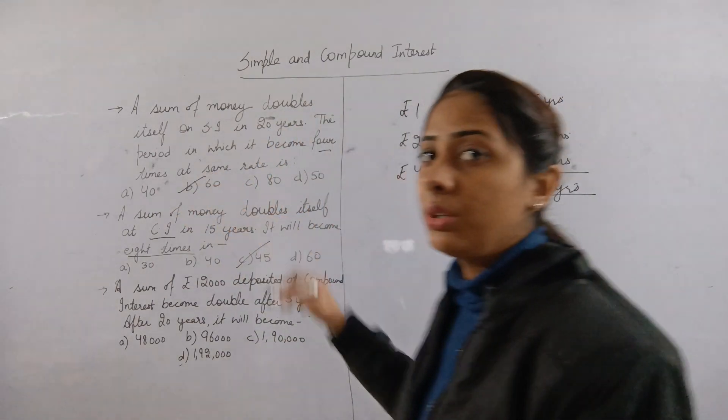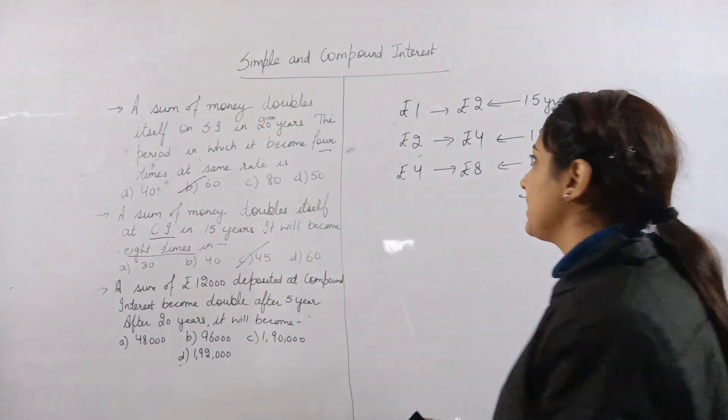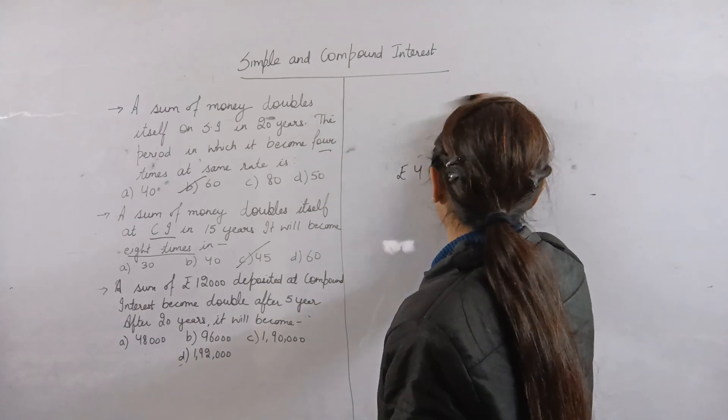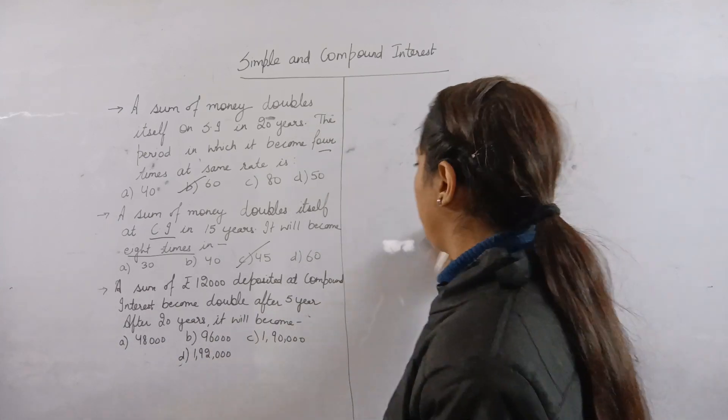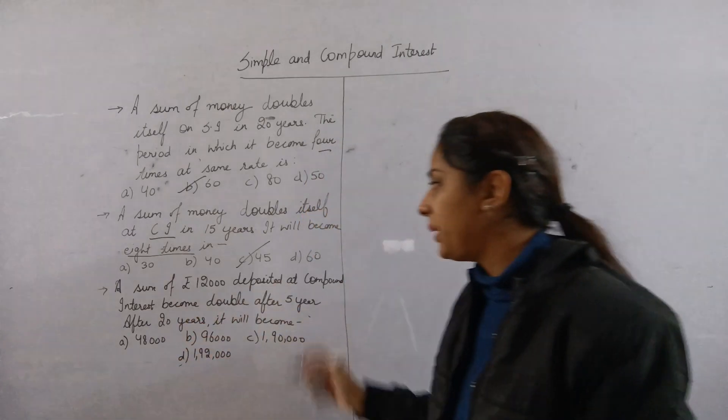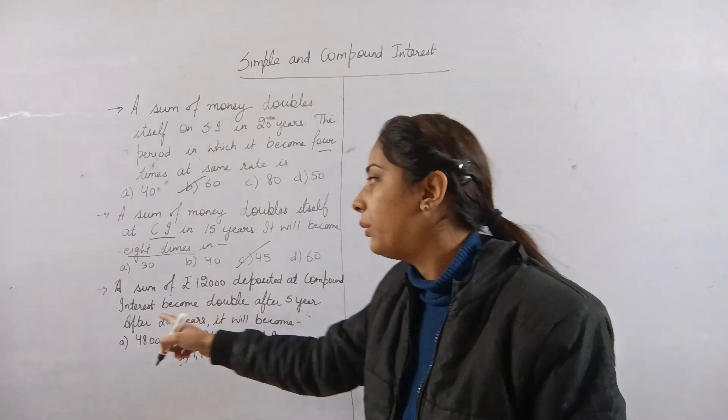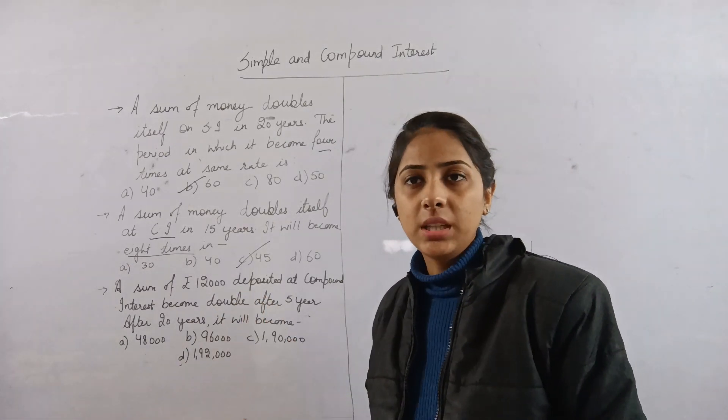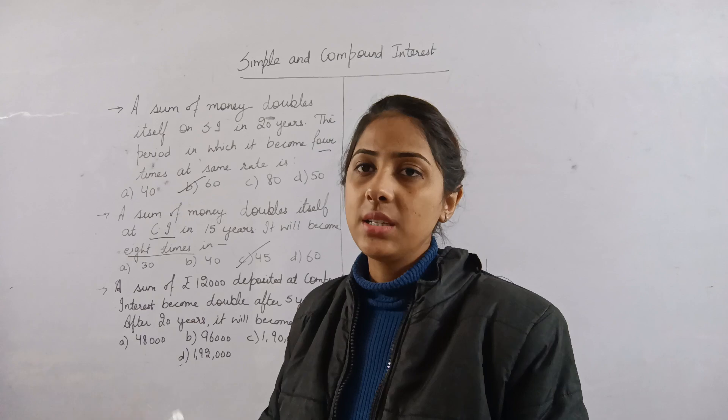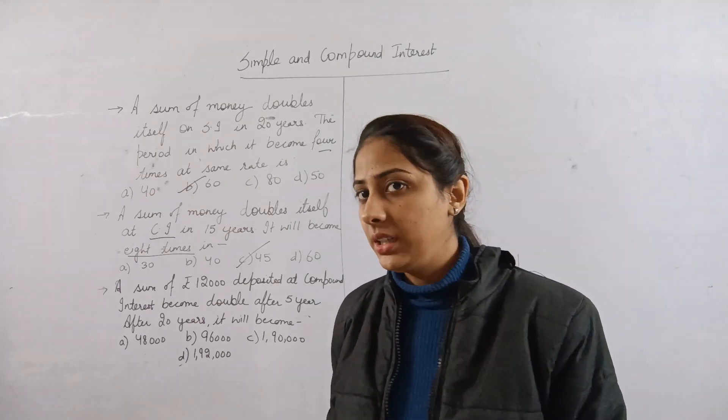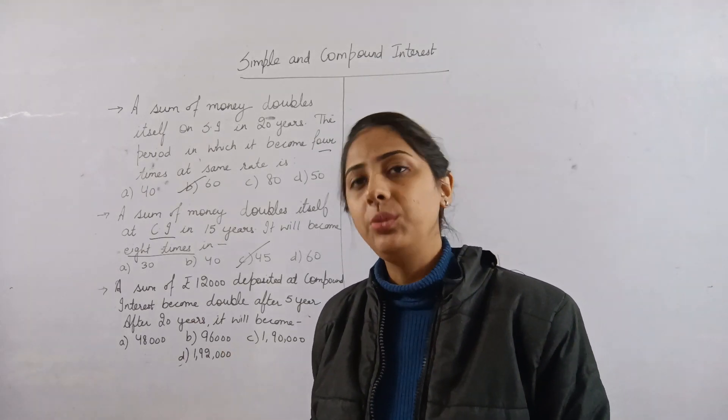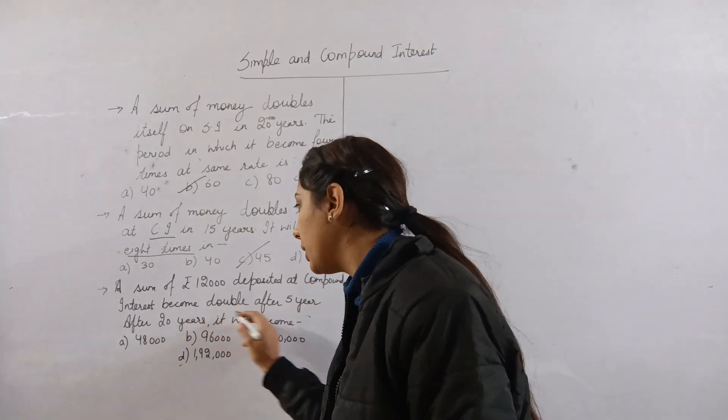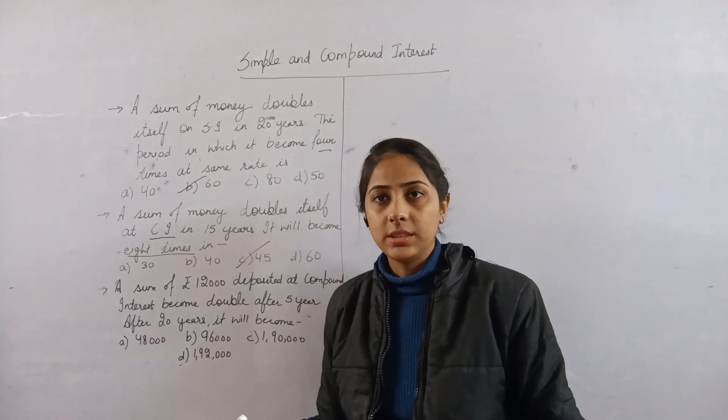Now I will move on to the last question. Question number 3: A sum of rupees 12,000 deposited at compound interest becomes double after 5 years. The principal is mentioned as 12,000. If you have 12,000 at compound interest, it will double after 5 years.